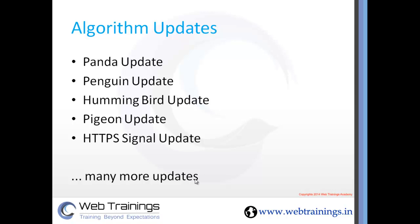The most popular updates released by Google include the Panda update, which targets websites using duplicate content. The next update was the Penguin update, which had two major parts: one targeting websites excessively building links, and another targeting excessive on-page SEO — such as adding too many keywords or repeating a keyword again and again, which was also affected by some versions of Penguin.